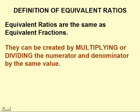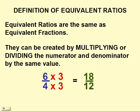Equivalent fractions can be created by multiplying or dividing the numerator and denominator by the same value. For example, if we take 6 over 4 and multiply the numerator and denominator by 3, we get 18 over 12. So 6 over 4 and 18 over 12 are equivalent fractions. They are the same value.